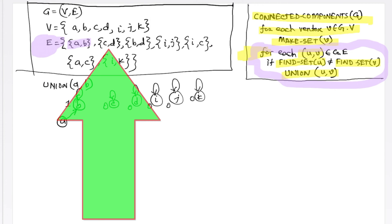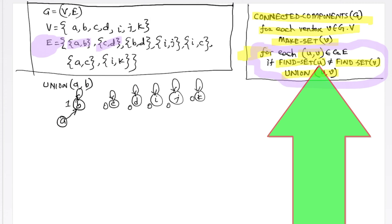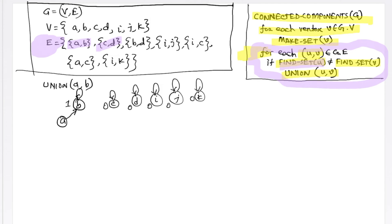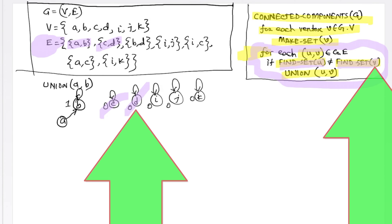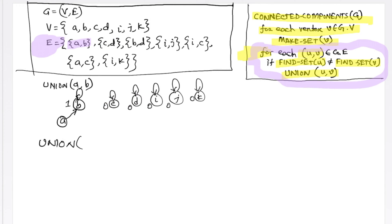Now our second edge is C, D. For C, D, find set C is in one component and find set D is in another component. Therefore, we will be applying the union operation: union C, D. As a result, D will become the root of the new tree and C will become the child. Of course, the rank will increase by one. The rest of the trees will remain the same.